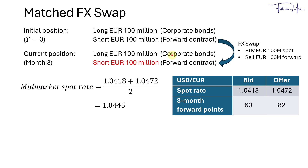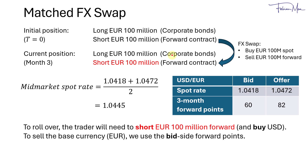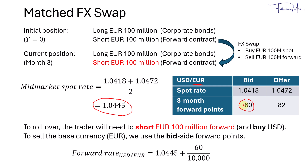For the forward points, we take the specific side based on the forward position. Given that the trader needs to short 100 million euros forward — that is, to sell the base currency — we use the bid side forward points. If you need to buy the base currency, we use the offer side forward points. So, taking the mid-market spot rate and the bid side forward points, the forward rate would be 1.0445 plus 60 over 10,000 (to convert points to decimal), giving us 1.0505. This is the all-in forward rate for the FX swap.